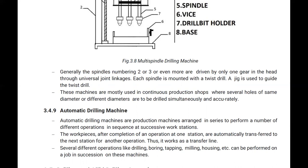Several different operations like drilling, boring, tapping, milling, and housing can be performed on a job in succession on these machines. In the automatic drilling machine, everything is automated — transfer lines, conveyor belts, or other transfer mechanisms are used for proper positioning of the workpiece, and accurate drilling is performed automatically.